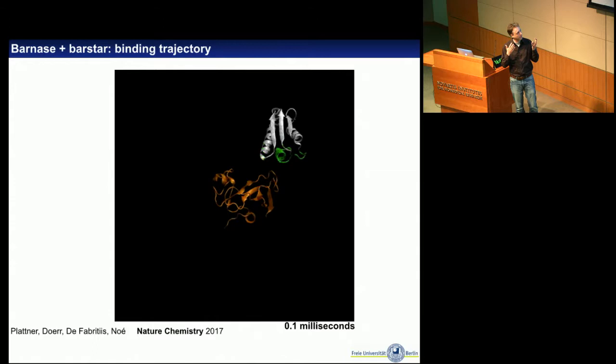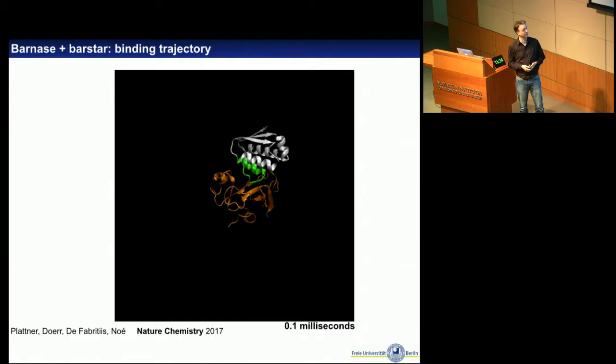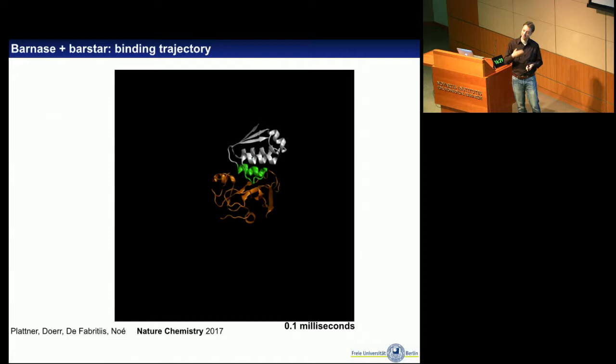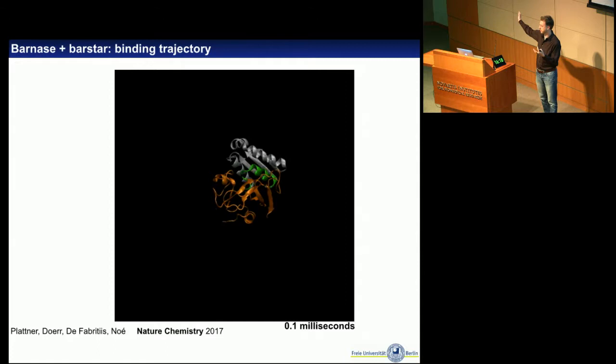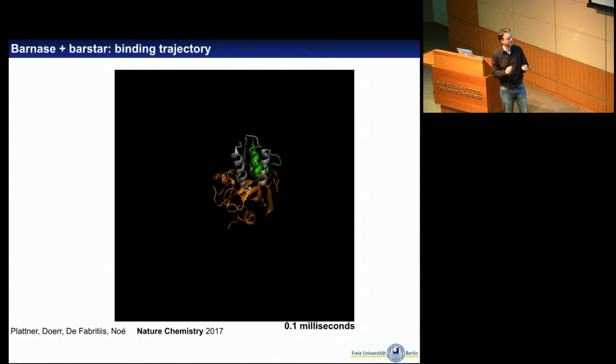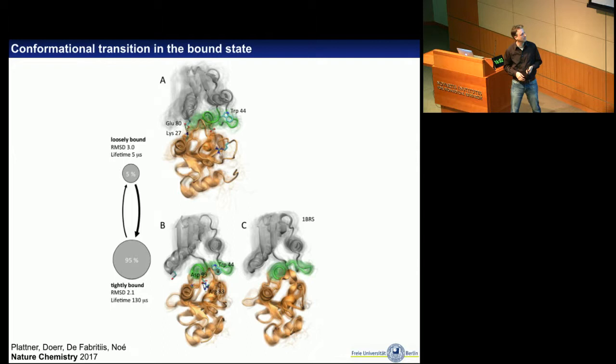The stable complex actually seems to consist of two substates — a new insight not reported before. I can visualize a binding trajectory sampled from the Markov State Model, concatenating trajectories from the database to produce a movie. This represents 100 microseconds that were never simulated as such, but gives an idea of how binding proceeds: the proteins search each other's surface, may dissociate and come back, but eventually find the docking pose and bind tightly, staying there for a very long time.